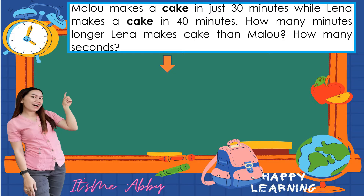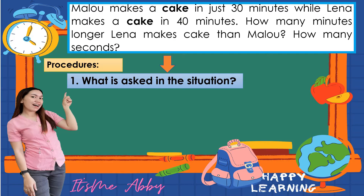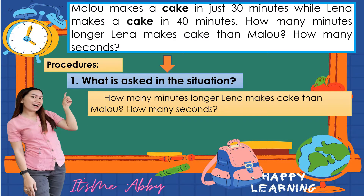Now for the second problem: Malou makes a cake in just 30 minutes, while Lena makes a cake in 40 minutes. How many minutes longer does Lena take to make a cake than Malou? And the second question being asked is: how many seconds longer?